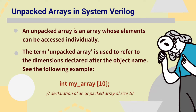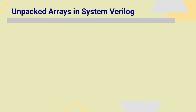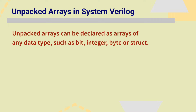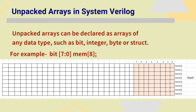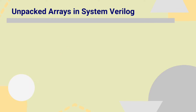Let us see this example: int my_array[10]. Here we are declaring an unpacked array of size 10. Unpacked arrays can be declared as arrays of any data type such as bit, integer, byte, or struct. For example, bit [7:0] mem[8] — here, after mem, 8 is written which means the depth of the memory is of size 8, while each element is of 8 bits. We can see there are lots of unused bits because those 8-bit elements are placed non-contiguously.